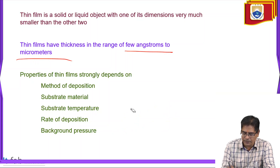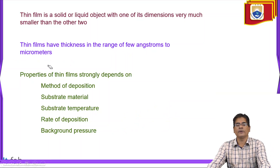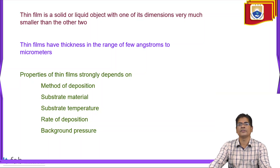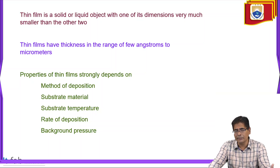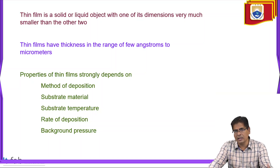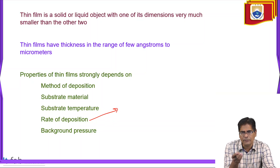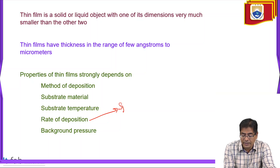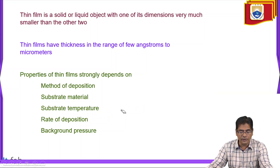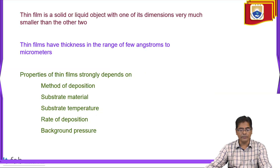The properties of thin films depend on: the method of deposition, the substrate material, the substrate temperature — which is very important — the rate of deposition, and the background pressure. For example, in sputtering, the rate of deposition depends on the sputtering yield of that particular material.